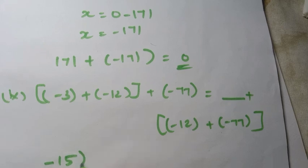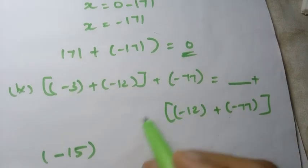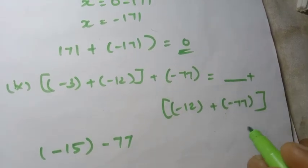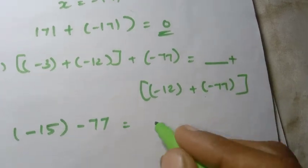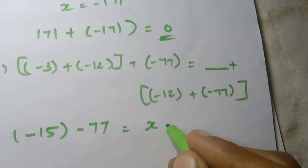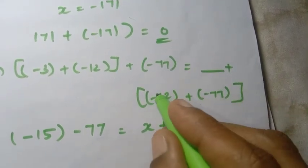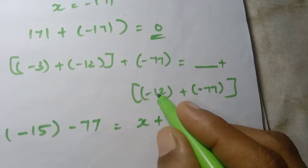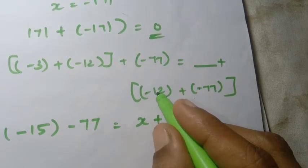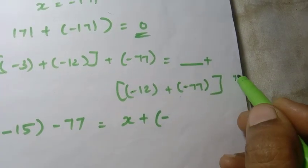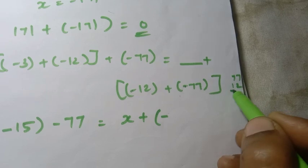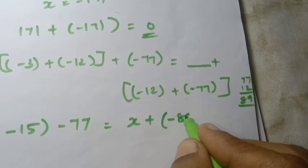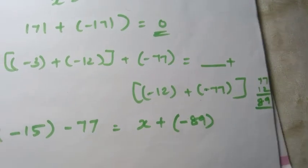Now we solve it further. We have minus 77 equal to x. In the bracket, plus with minus gives minus — same sign. So we add 77 and 12: that gives 89. So we have minus 89.